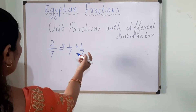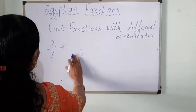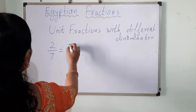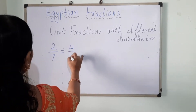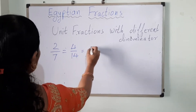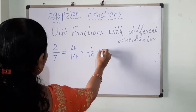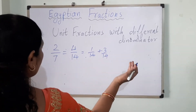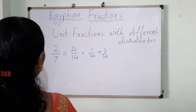So what do we do? We take an equivalent fraction. Let's try multiplying by 2: 2 twos are 4, 7 twos are 14, giving us 4 upon 14. This gives 1 upon 14 plus 3 upon 14, but 3 upon 14 cannot be simplified, so this doesn't work.